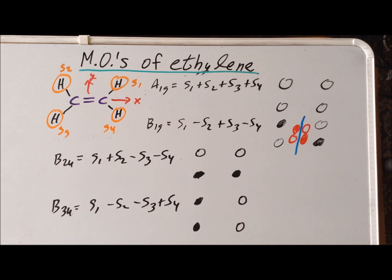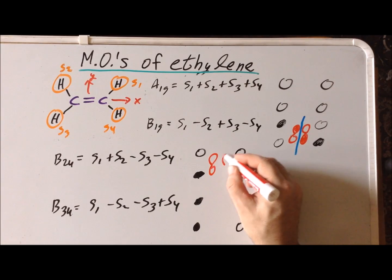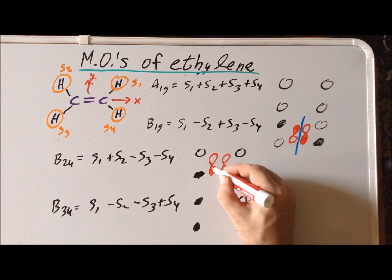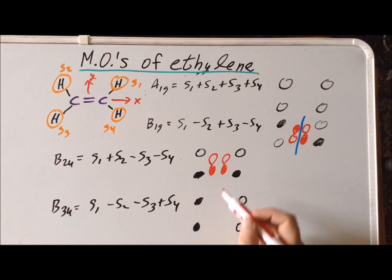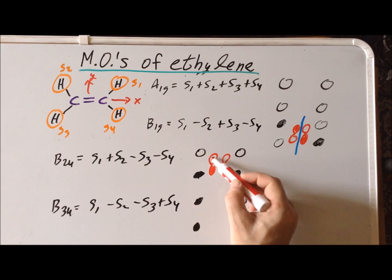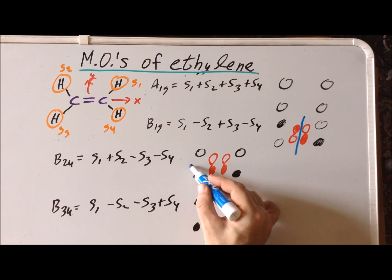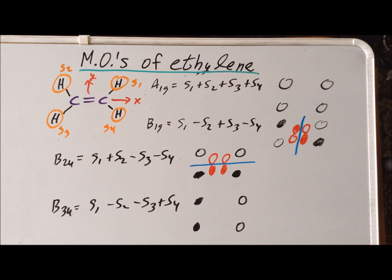For B2u, we again use py orbitals on carbon, but now the carbon-carbon interaction is net bonding, while the hydrogens with respect to each other are antibonding. So we have a node in the B2u molecular orbital going in that particular direction.